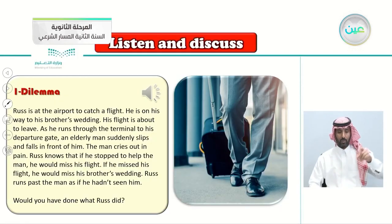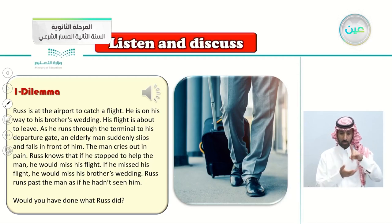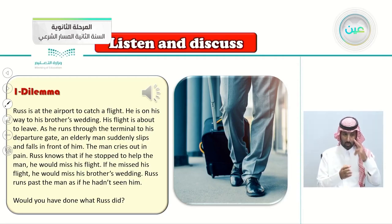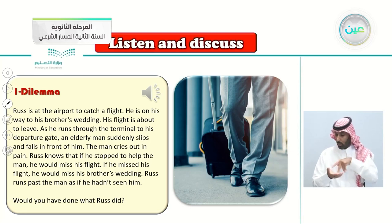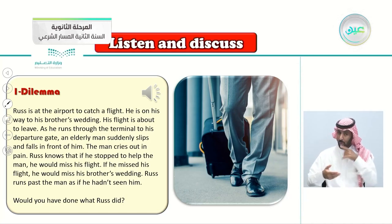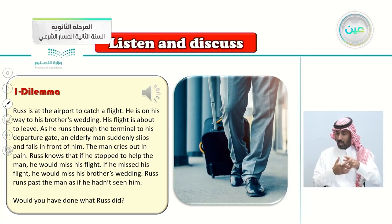Dilemma number one: Russ is at the airport to catch a flight. He is on his way to his brother's wedding. His flight is about to leave. As he runs through the terminal to his departure gate, an elderly man suddenly slips and falls in front of him — the man cries out in pain. Russ knows that if he stopped to help the man, he would miss his flight and his brother's wedding. Russ runs past the man as if he hadn't seen him.